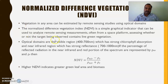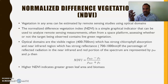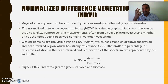The optical domains seen from spatial platforms include the visible region, which has strong chlorophyll absorption, and the near infrared region, which has strong reflectance. NDVI is calculated using a formula based on the percentage of reflected radiation in the near infrared and red portions of the spectrum. NDVI varies between minus 1 to plus 1; a normal NDVI will be somewhere between 0.1 to 0.6. A higher NDVI indicates greater green leaf area and very good biomass in that area.